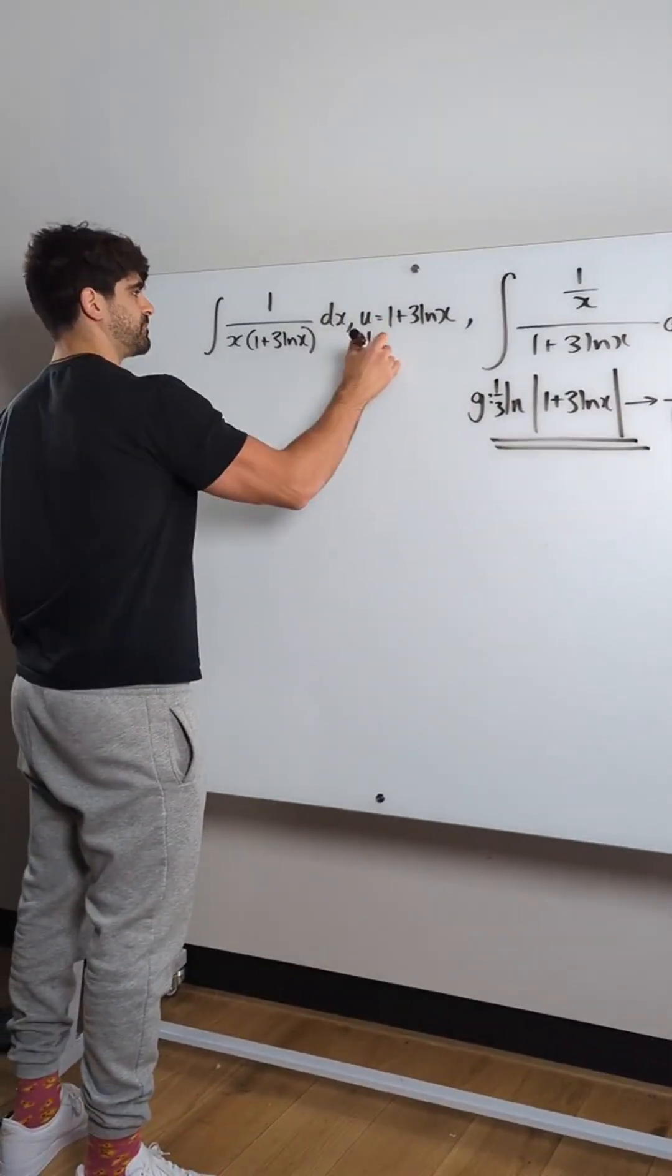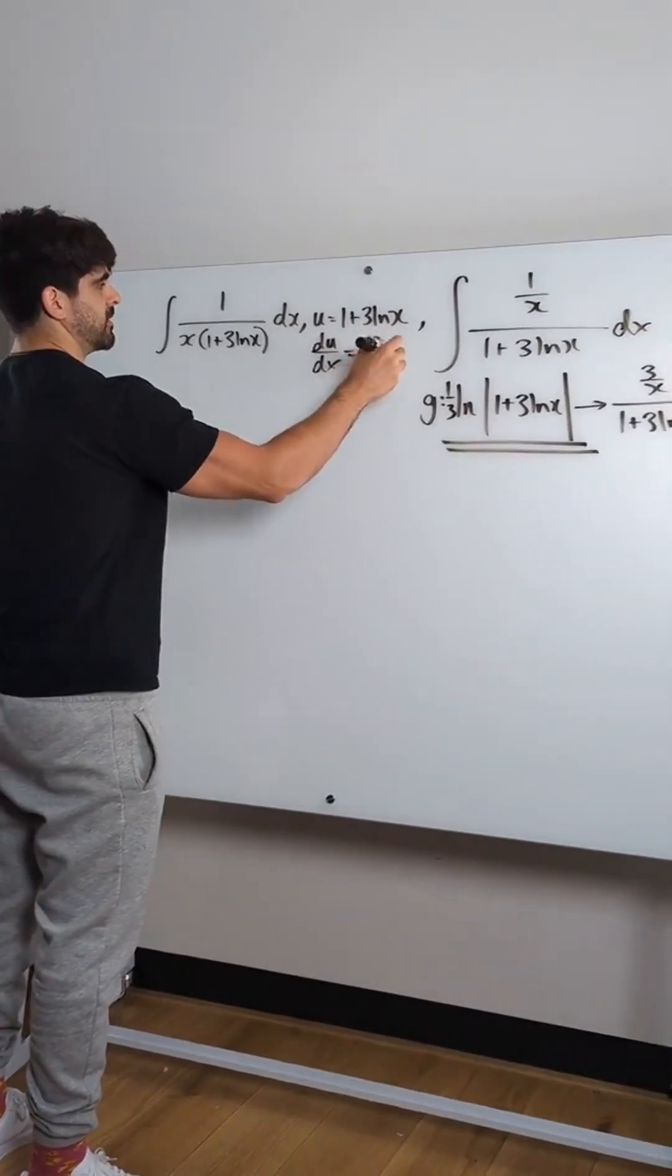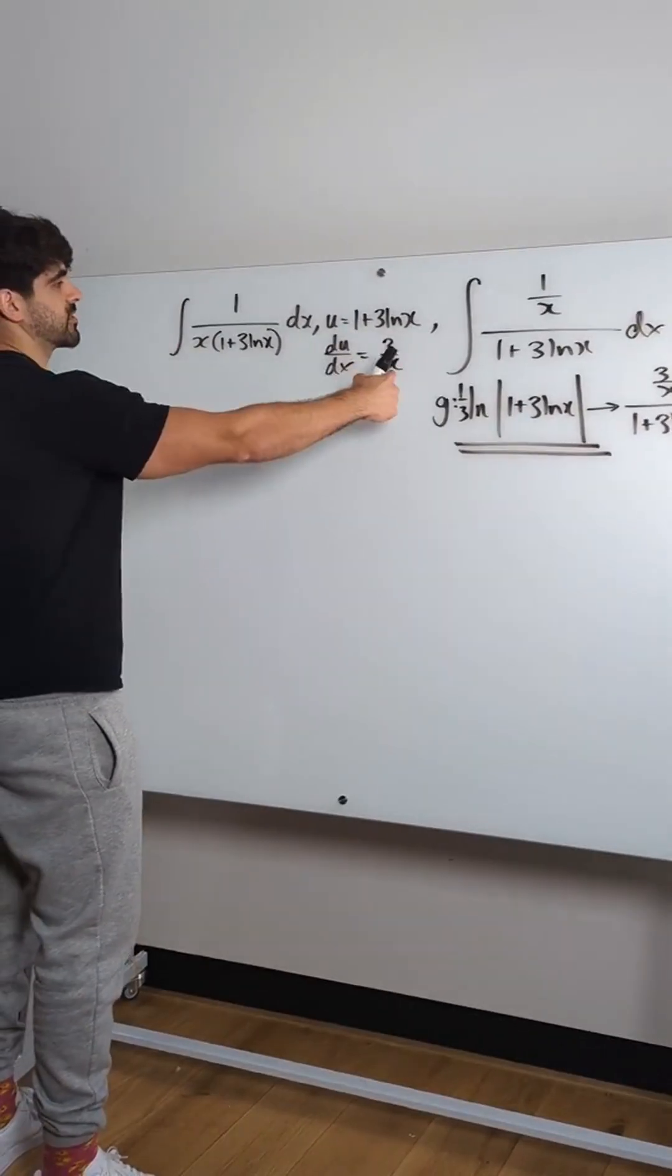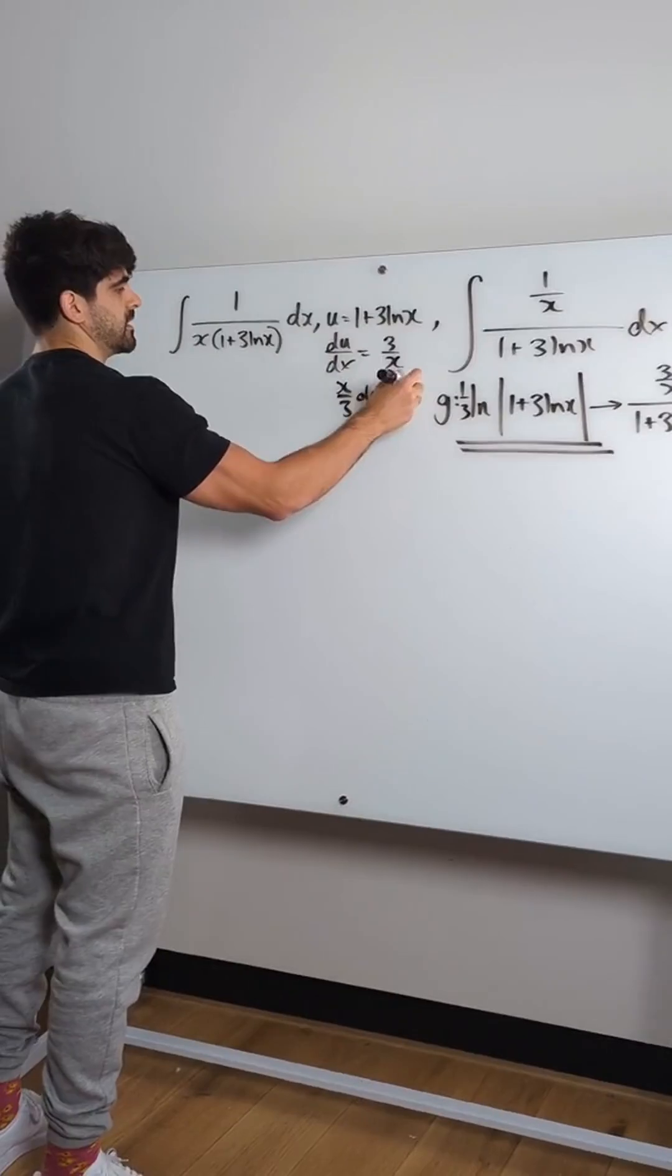We can differentiate. We just did that, right? This is 3 over x. We're going to have to cross multiply. Well, we're rearranging for dx. So we'll have x over 3. du is dx.